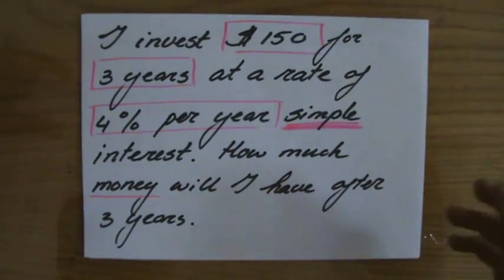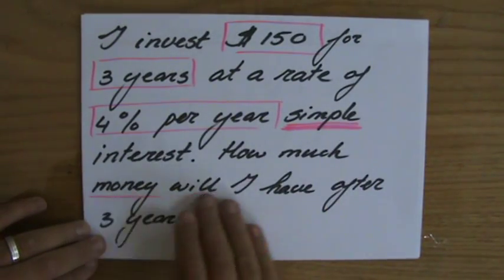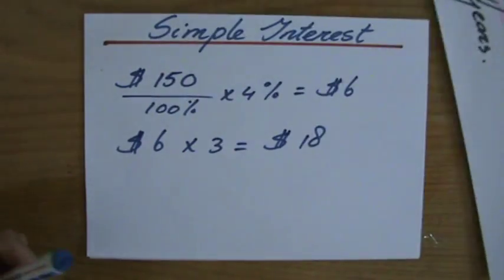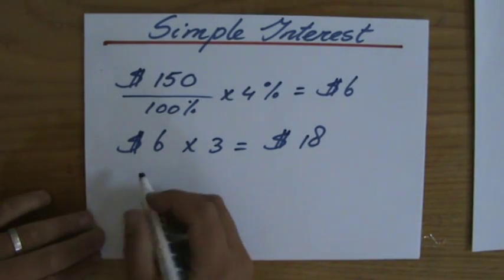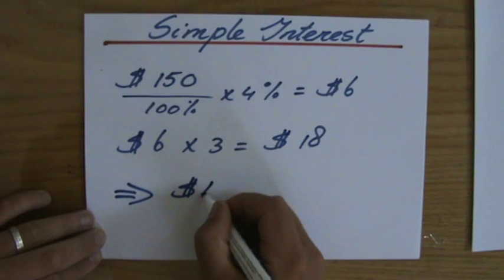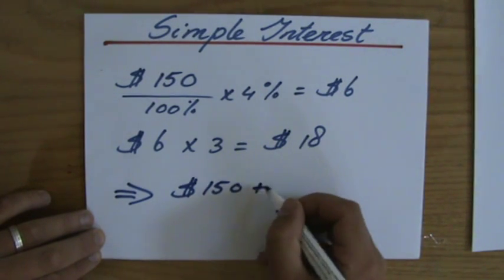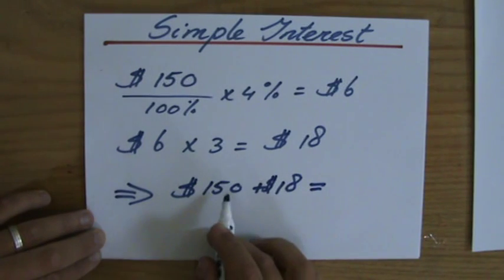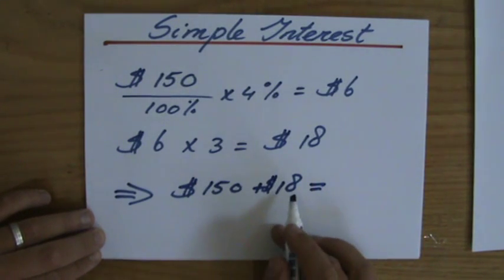Don't be overly excited now that you have an answer of $18, because what is the question? How much money will I have after three years? That's really important. So how much money will I have? The final answer is $150 plus the interest they're giving me.